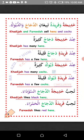Khadija wa Faridatun tabi'ani addajaja wa adduyuk — Khadija and Farida, they both sell hens and cocks. Addajaja means hens, and adduyuk means cocks.